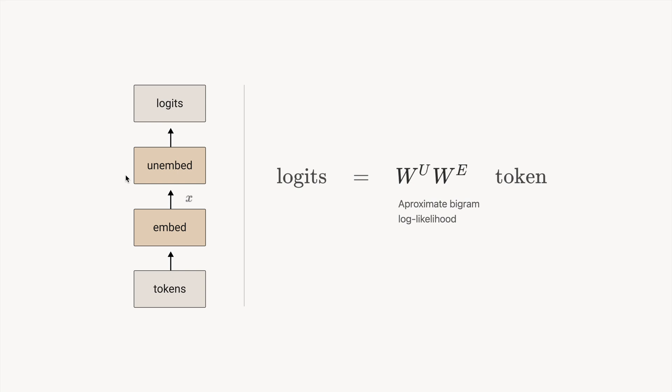Those bigram statistics, in particular, need to represent the bigram log-likelihoods, because we're going to feed it into a softmax, so we want to have the log-likelihoods. It'll probably be an approximation, because it has to be low-ranked. Probably the embeddings that we're using are much smaller than our vocabulary size, so it's an approximation of that.